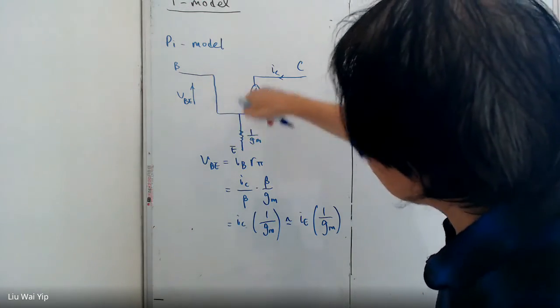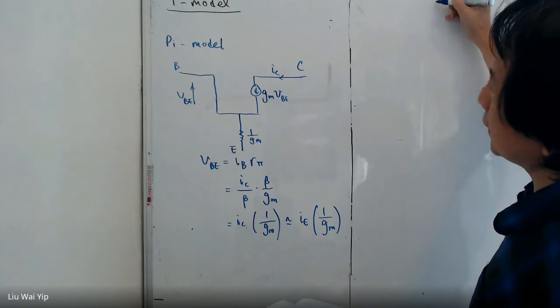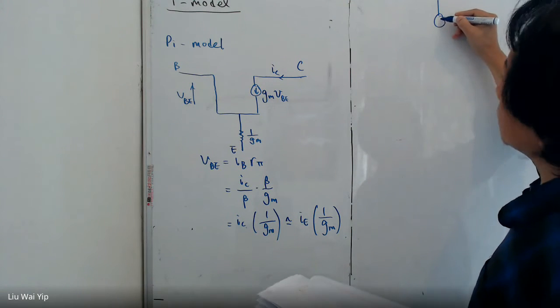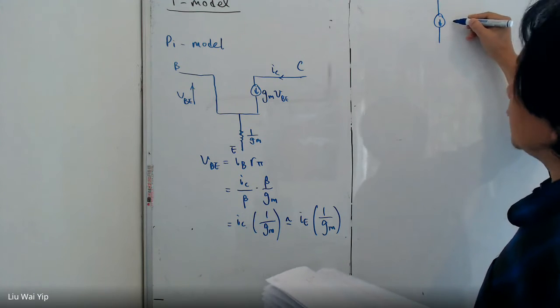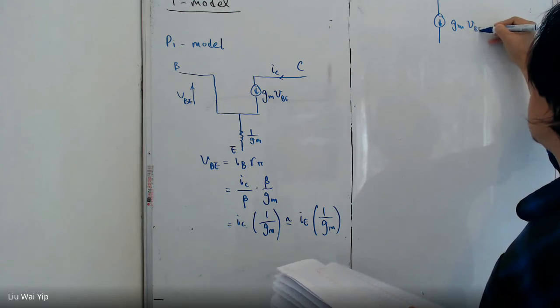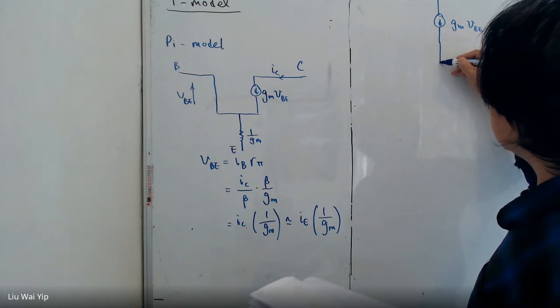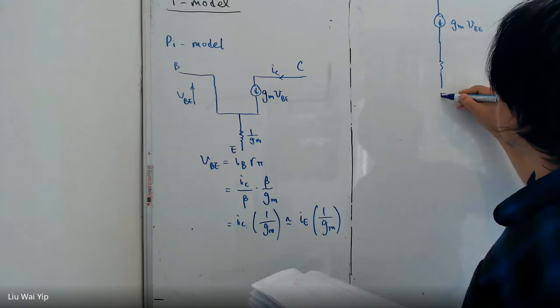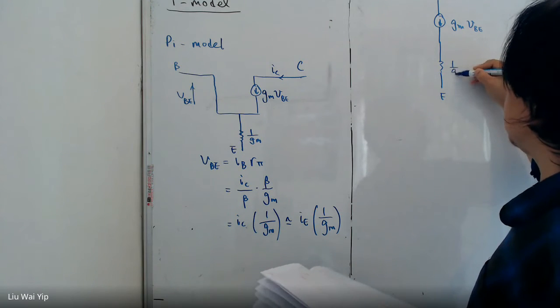And if you just signify the form, instead of drawing something like this, you can just do this. And then, this is E, 1 over GM.